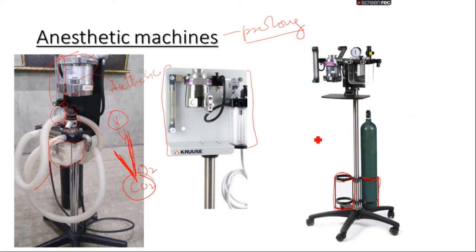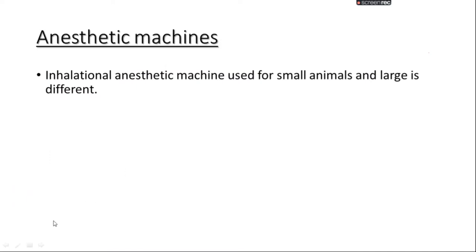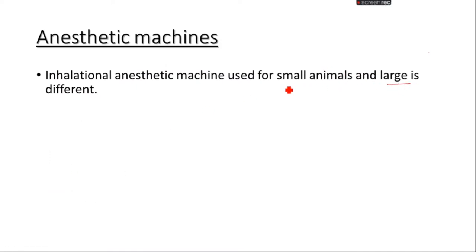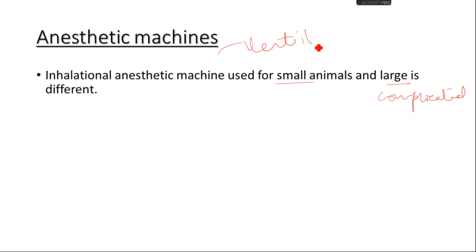Anesthetic machines also come in types for large animals and small animals. For large animals, the system is a bit more complicated, and therefore the anesthetic machine used must also include a ventilator — this is a must. For small animals, a ventilator is also present but does not matter as much. For large animals, it matters a lot.